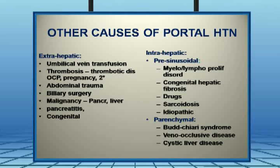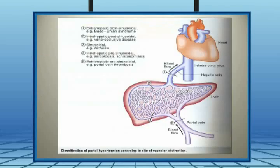Summarizing the causes: extra-hepatic, intra-hepatic, and parenchymal. The pictorial depiction of portal hypertension shows what happens at each junction in the liver, with subsequent enlargement of the spleen, and how hepatic blood flow increases in all three conditions — pre-hepatic, hepatic, and post-hepatic — causing portal hypertension.